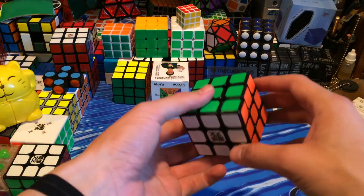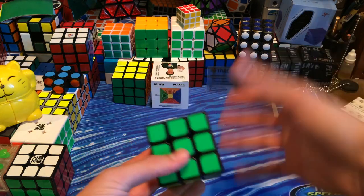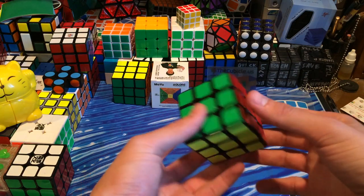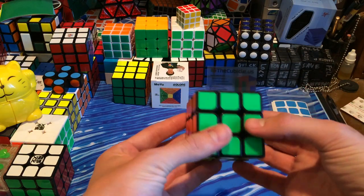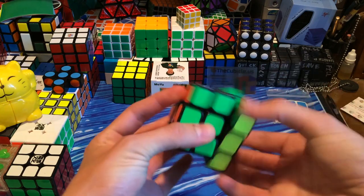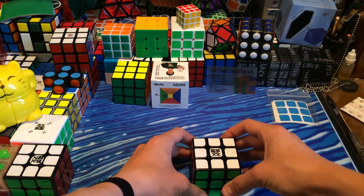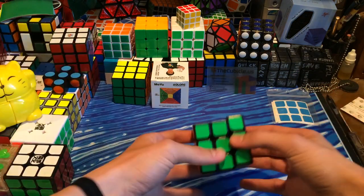So you can buy the Moyu Aolong, which is also referred to as the Moyu Weilong version 3, on thecubicle.us, who was kind enough to send me this as a tester cube. And you can get it on their site for $16. And I think the price might drop soon because usually Moyu puzzles are pretty expensive at first because of the high demand. But then eventually they'll come out with a new one and then the prices will lower.